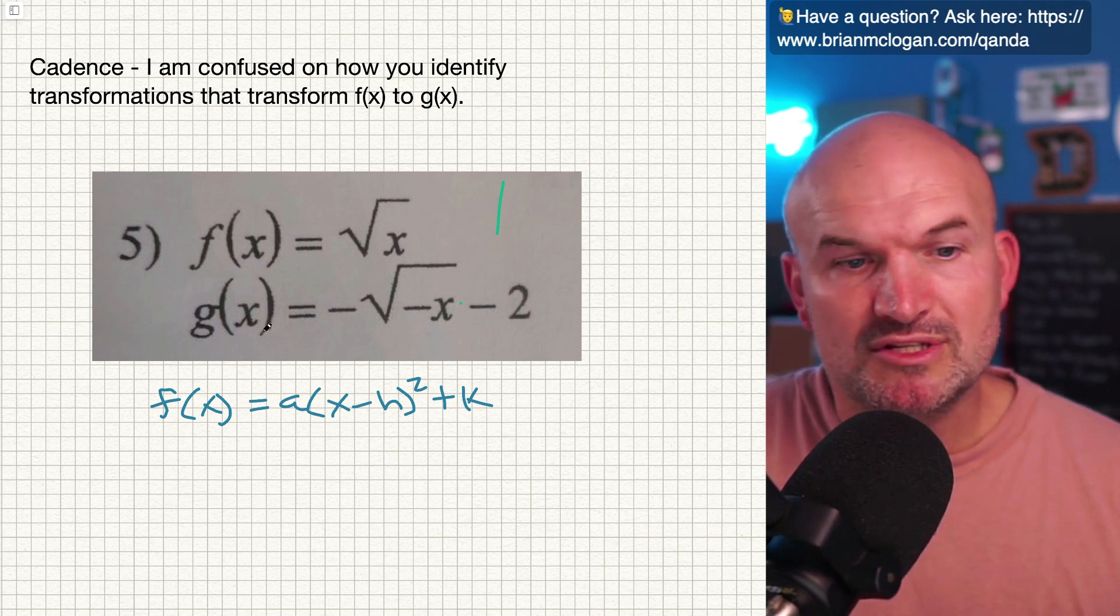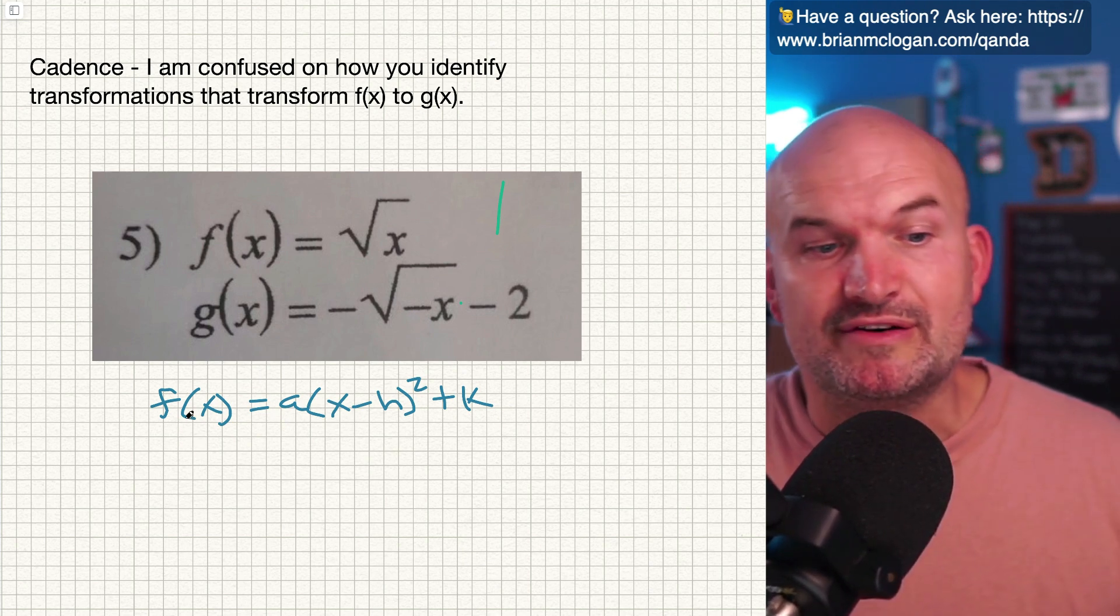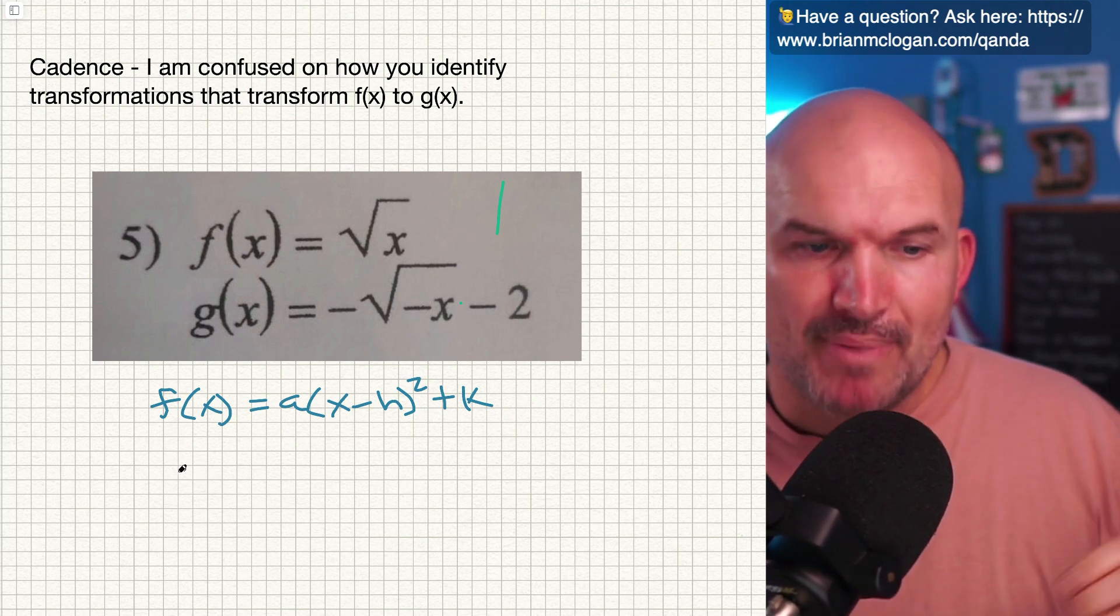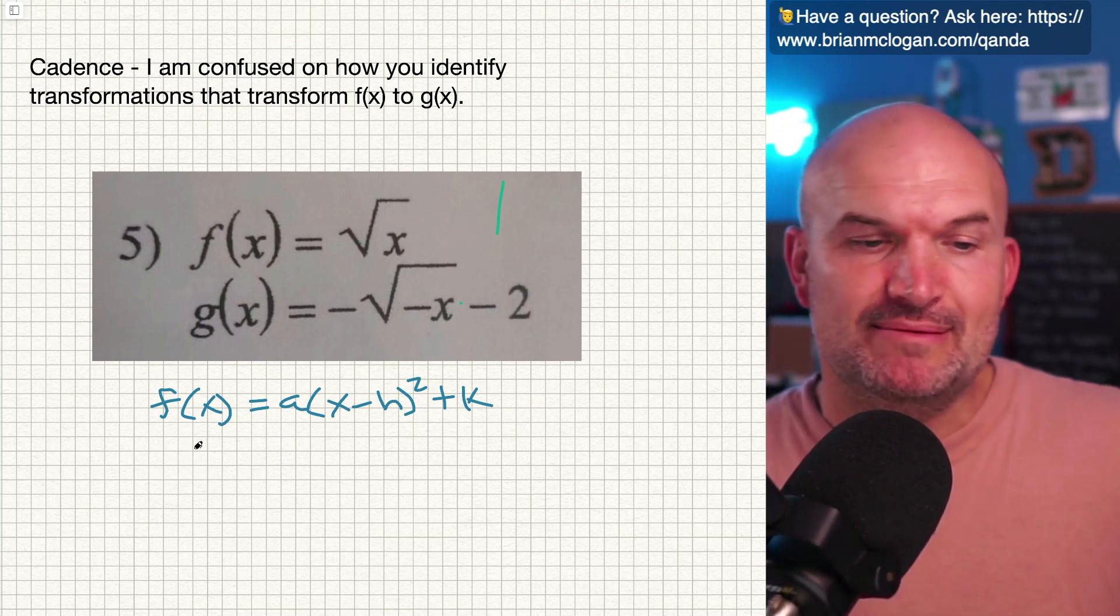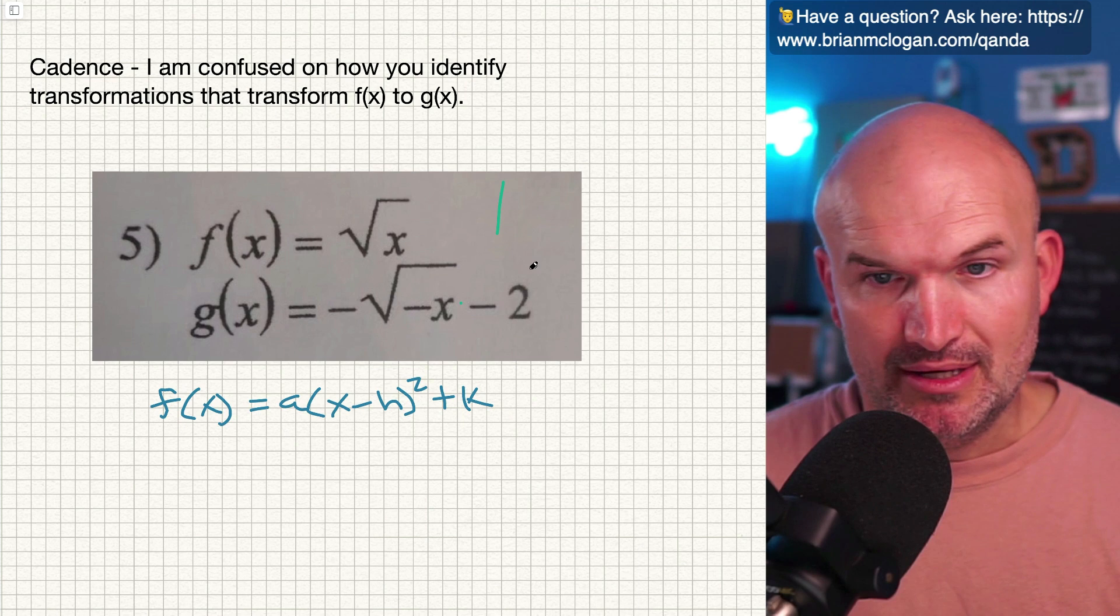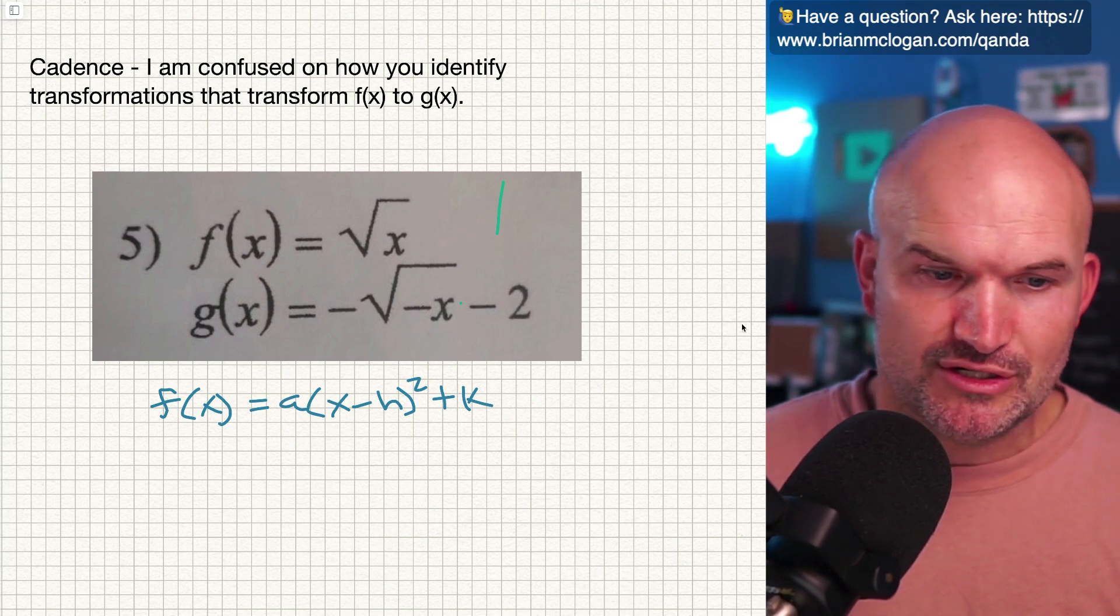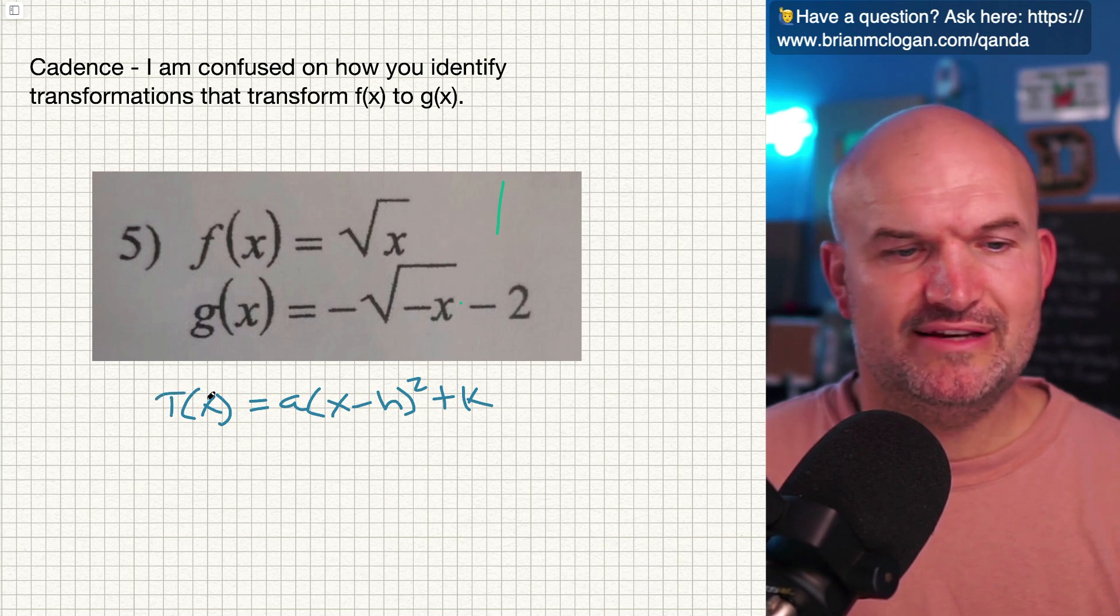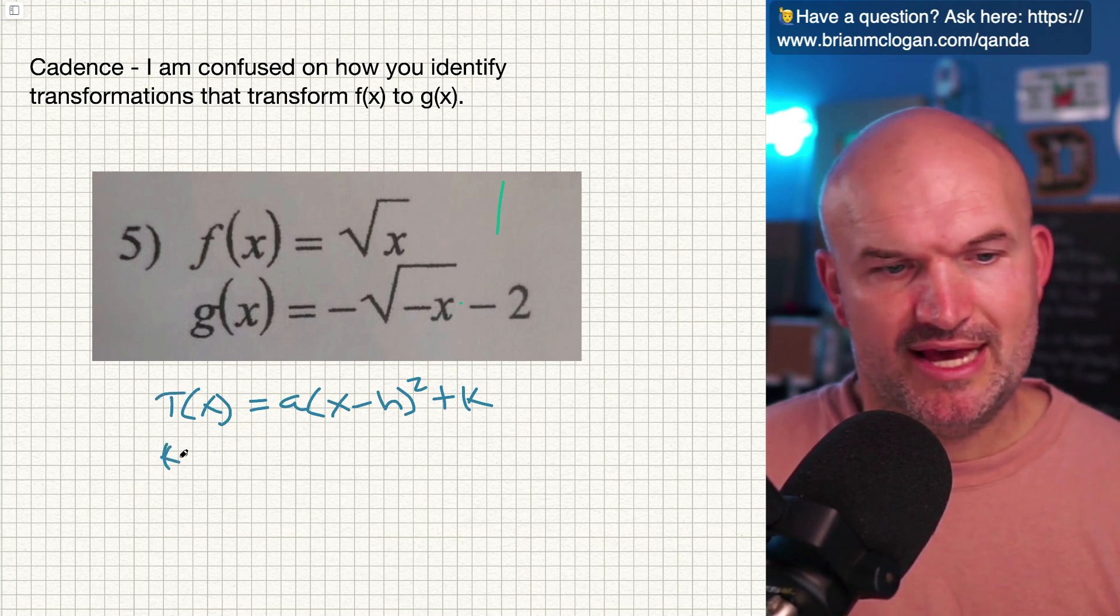All right. Now, once we start talking about transformations of radicals or of different functions, we actually add in some different letters, but their position and how they impact the graph is exactly the same. And I'm not going to call this f of x. Let's call this T of x. And then let's do this one k of x.